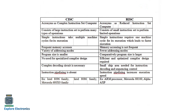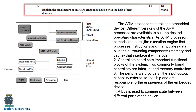Next we have RISC and CISC. As the names say, CISC stands for Complex Instruction Set Computer and RISC stands for Reduced Instruction Set Computer. RISC has reduced — meaning small or fewer — instructions, while CISC has complex instructions. If you understand the full forms of CISC and RISC, you can write all the differences easily.